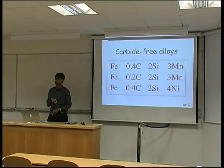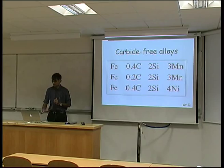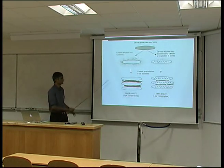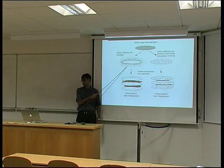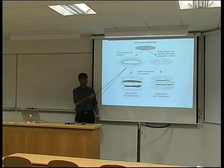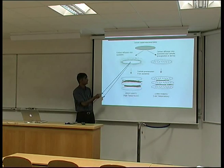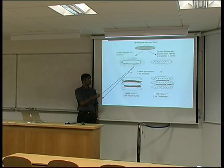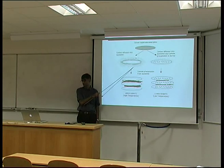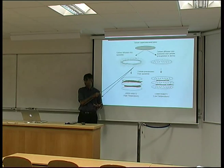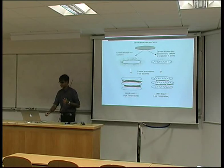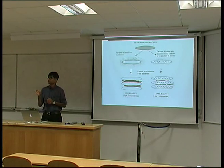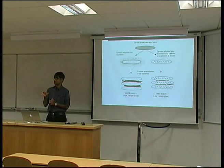You can actually get rid of that cementite precipitation process. We want to stop the reaction at an early stage so that the cementite simply doesn't precipitate, and we end up with just a mixture of plates of ferrite and carbon-enriched austenite, which remains stable to room temperature. We can do that by suppressing the cementite.